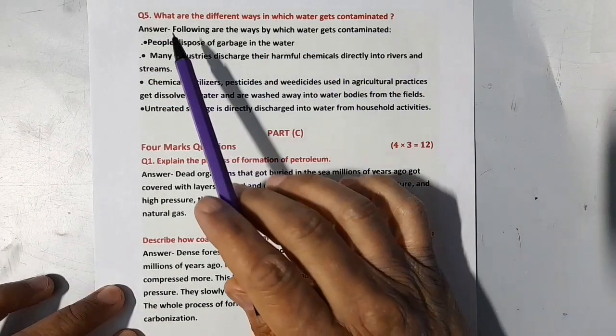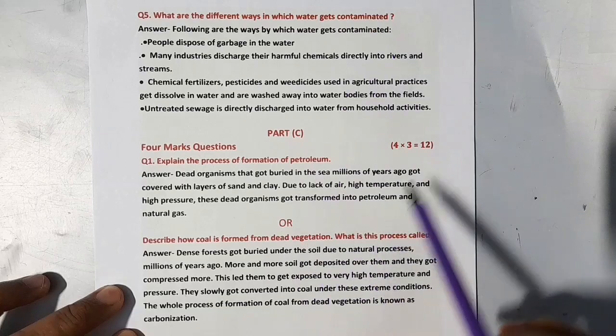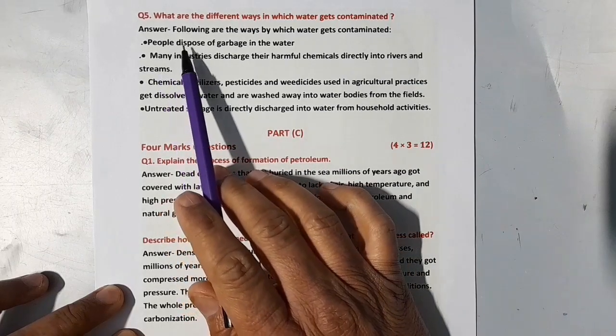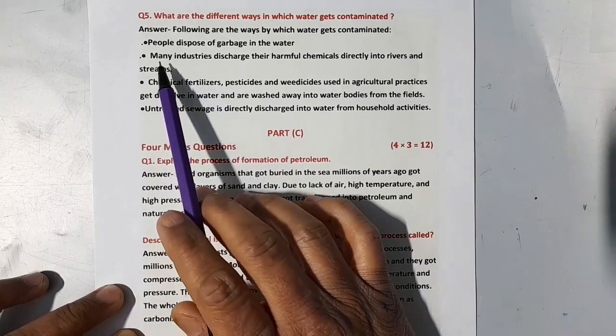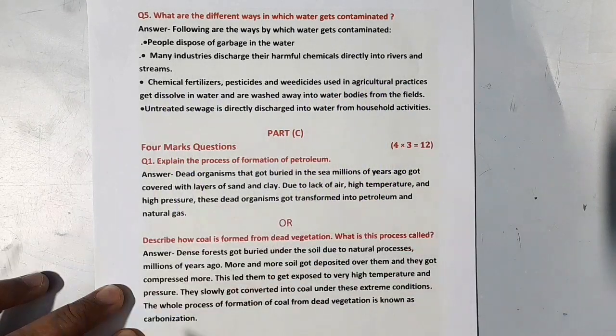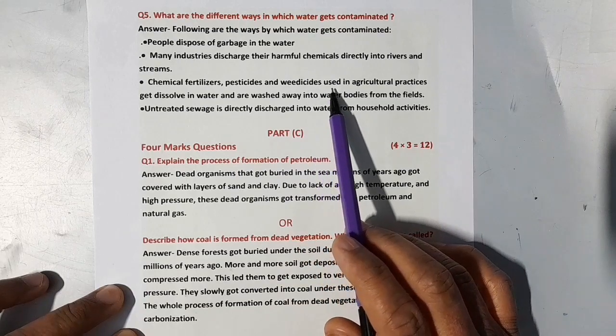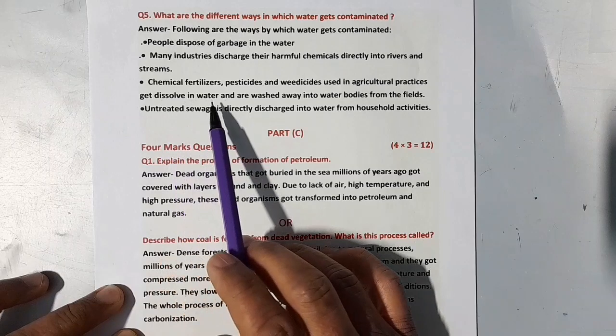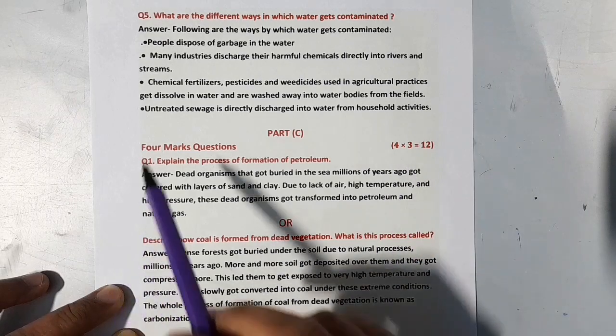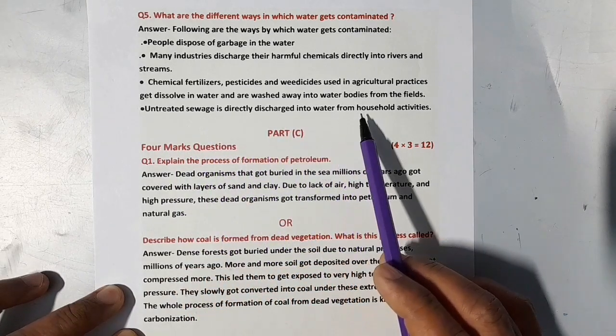Next question: What are the different ways in which water gets contaminated? Following are the ways: 1. People dispose of garbage in the water. 2. Many industries discharge their harmful chemicals directly into rivers and streams. 3. Chemical fertilizers, pesticides and weedicides used in agricultural practices get dissolved in water and are washed away into water bodies from the fields. 4. Untreated sewage is directly discharged into water from household activities.